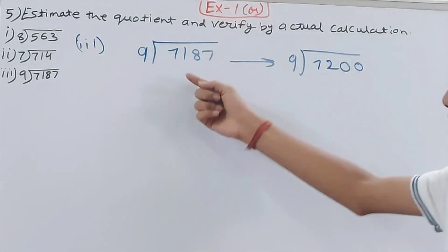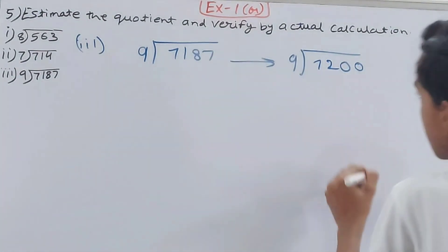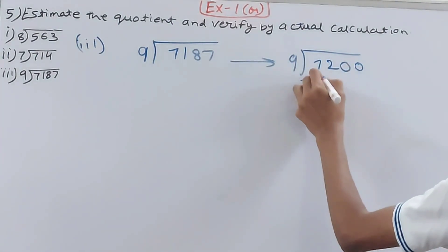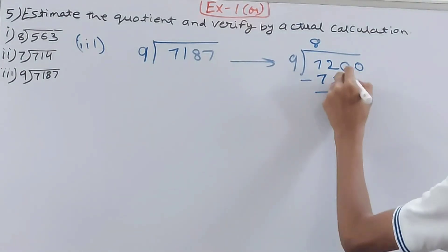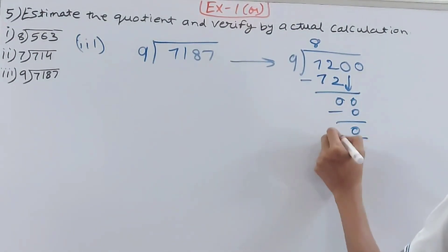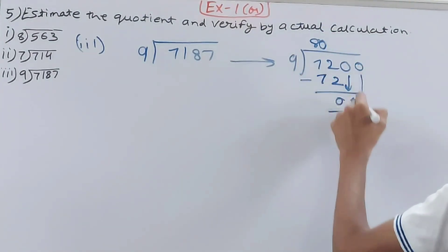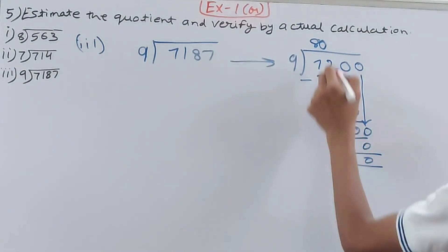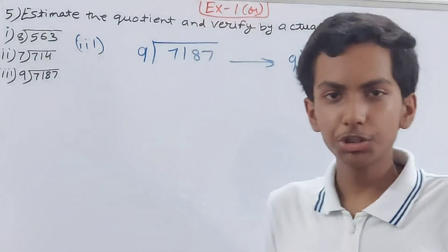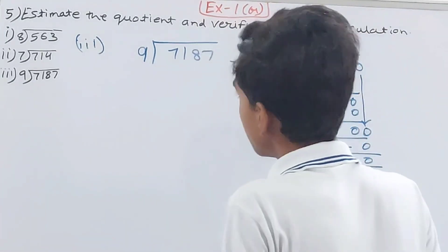For the estimated: 9 into 72 is 8, bring down 0, minus 0, bring down one more 0, minus 0 — estimated quotient is 800. Now for the actual division of 7187 ÷ 9.